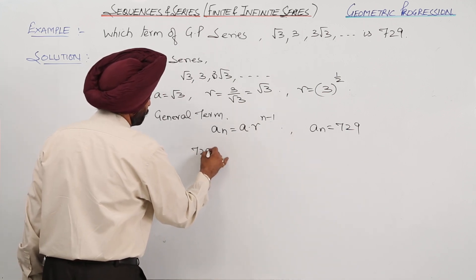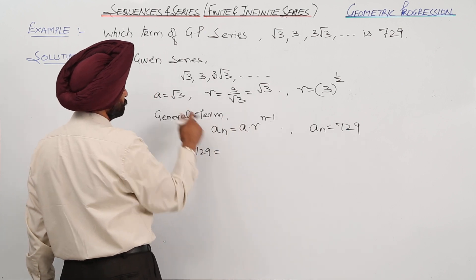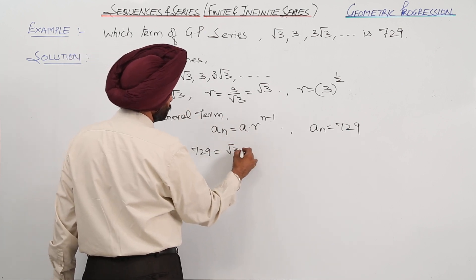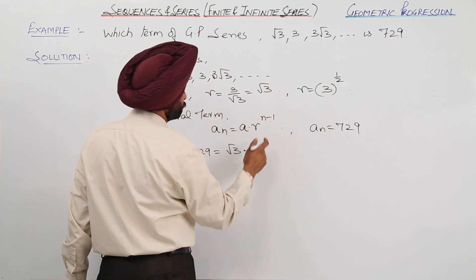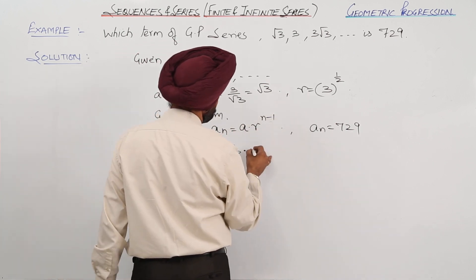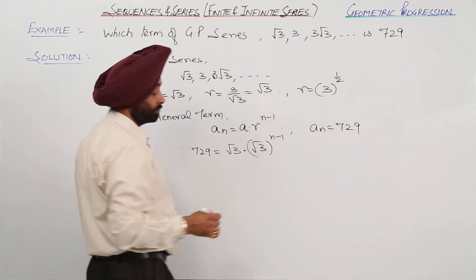729 = a, first term is √3, multiplied by r, which is √3, raised to power n-1.